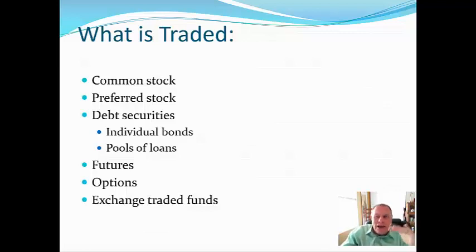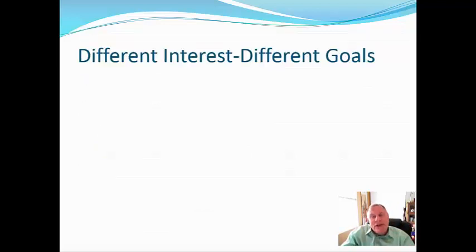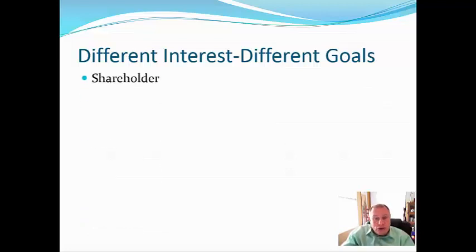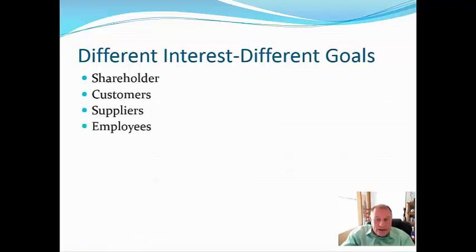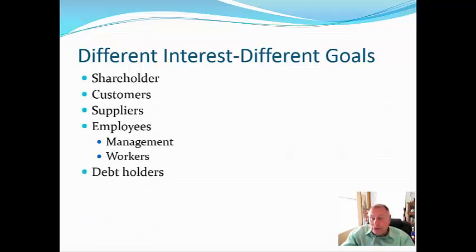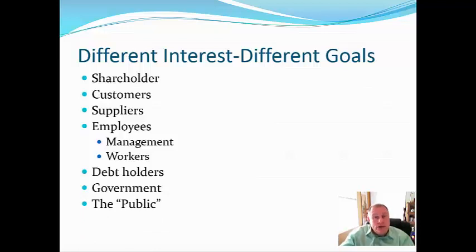When we look at a company, different groups have different goals. There's the shareholder, customers, suppliers, employees, management, workers, debt holders, the government, and the public. Each one of these has a different set of goals and objectives they would like to see.